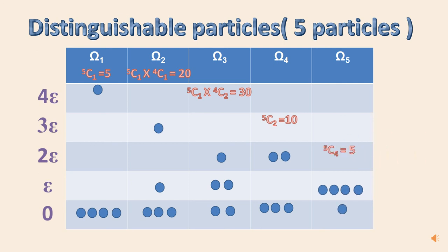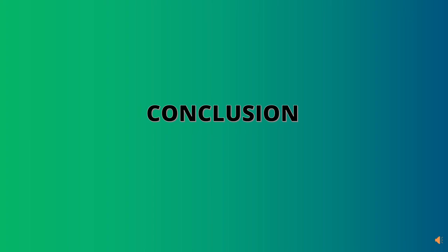What do we observe here? We observe as N increases, the particles tend to be found in a particular arrangement. That is, one arrangement predominates over the other. We found out that how we can calculate the number of microstates for distinguishable and indistinguishable particles.